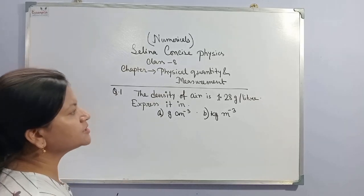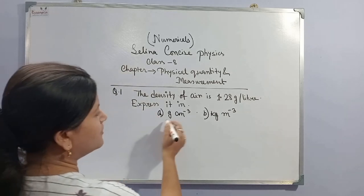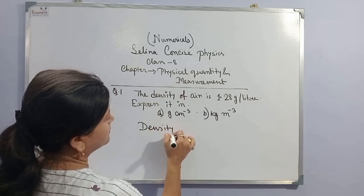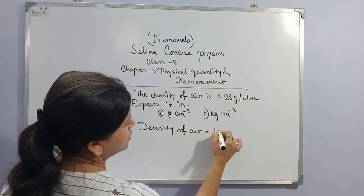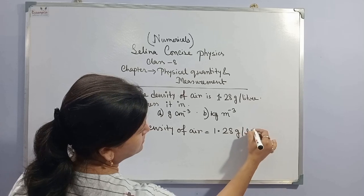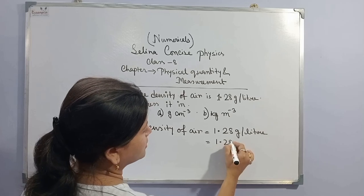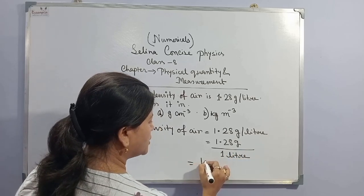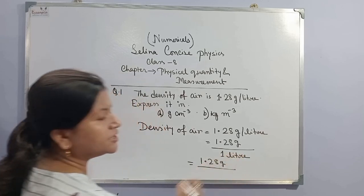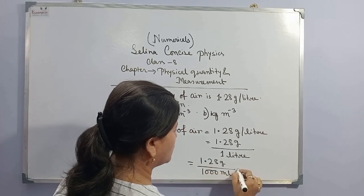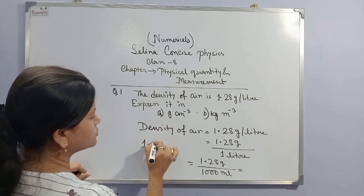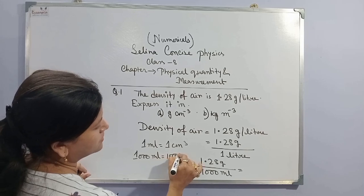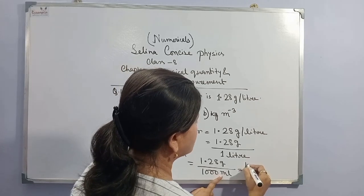First sum: the density of air is 1.28 gram per litre. Express it into gram per cubic centimetre and kg per cubic metre. Density of air is 1.28 gram divided by 1 litre. So 1.28 gram — we convert this litre into millilitre, that means 1000 ml. We know that 1 ml equals to 1 cubic centimetre, so 1000 ml equals to 1000 cubic centimetre. Now replace 1000 ml by 1000 cubic centimetre.